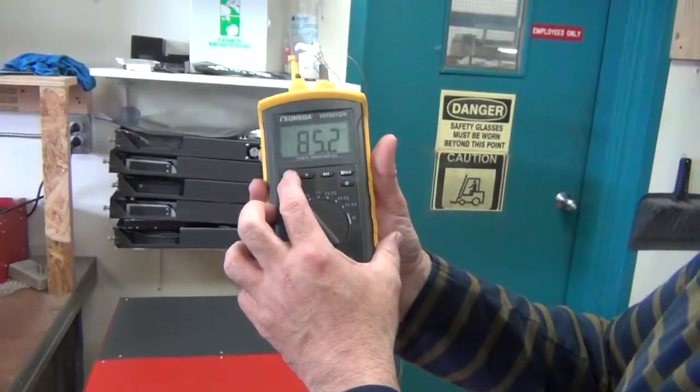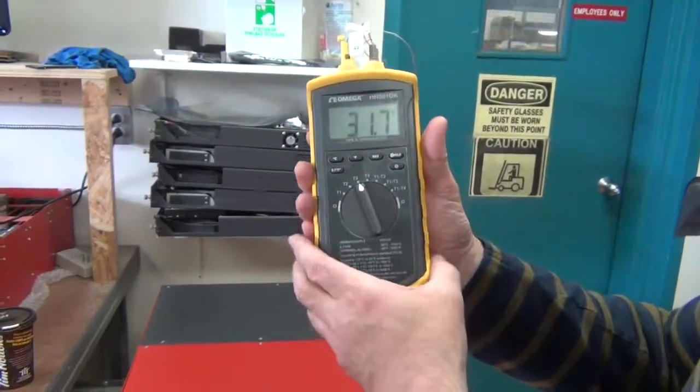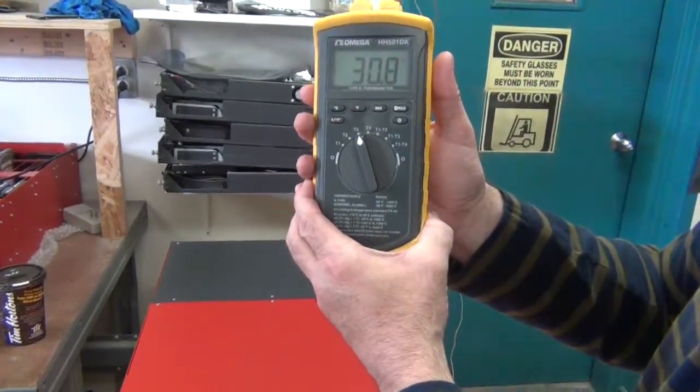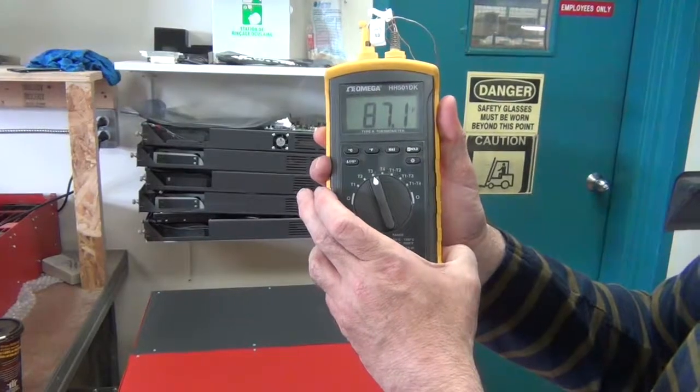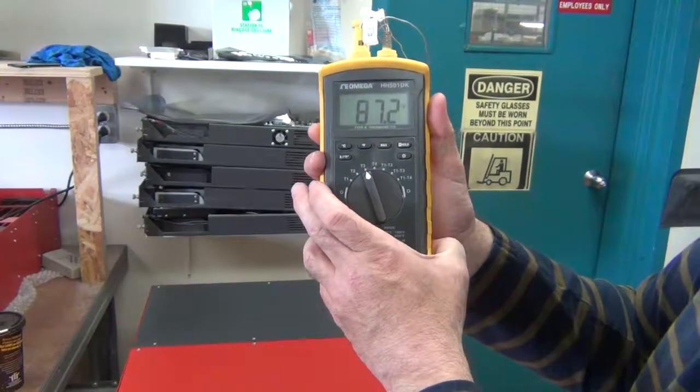Switch it back to Celsius and we go to temperature three, which is by the inner fans. It's 30.6 degrees Celsius or 87.1 degrees, 87.2 degrees Fahrenheit.